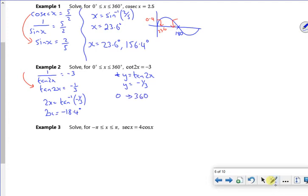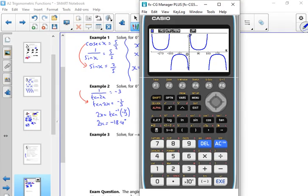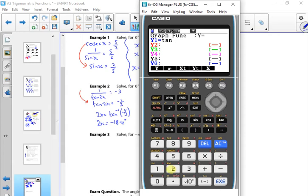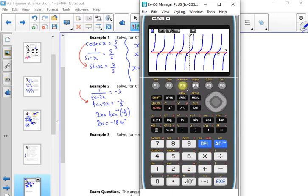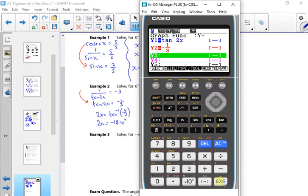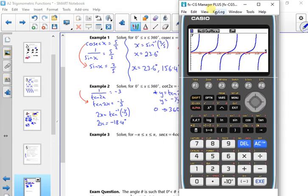I'm just going to graph y equals tan 2x and y equals minus 1/3 from 0 to 360. Let's do it as a reminder, tan 2x minus 1/3. Sort out my values now up to 360, going up in 45s. There's my numbers.